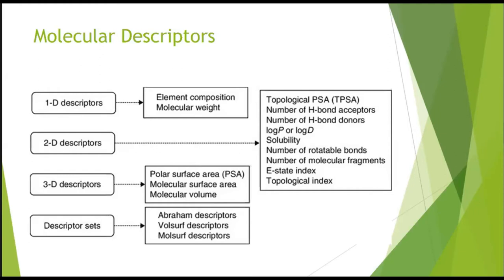3D descriptors are generated from 3D structures and include molecular volume and molecular surface area — especially polar surface area, which is a very important descriptor. Descriptor sets contain a set of numbers describing a complex property or a set of properties, and they are used as a set, not separately.